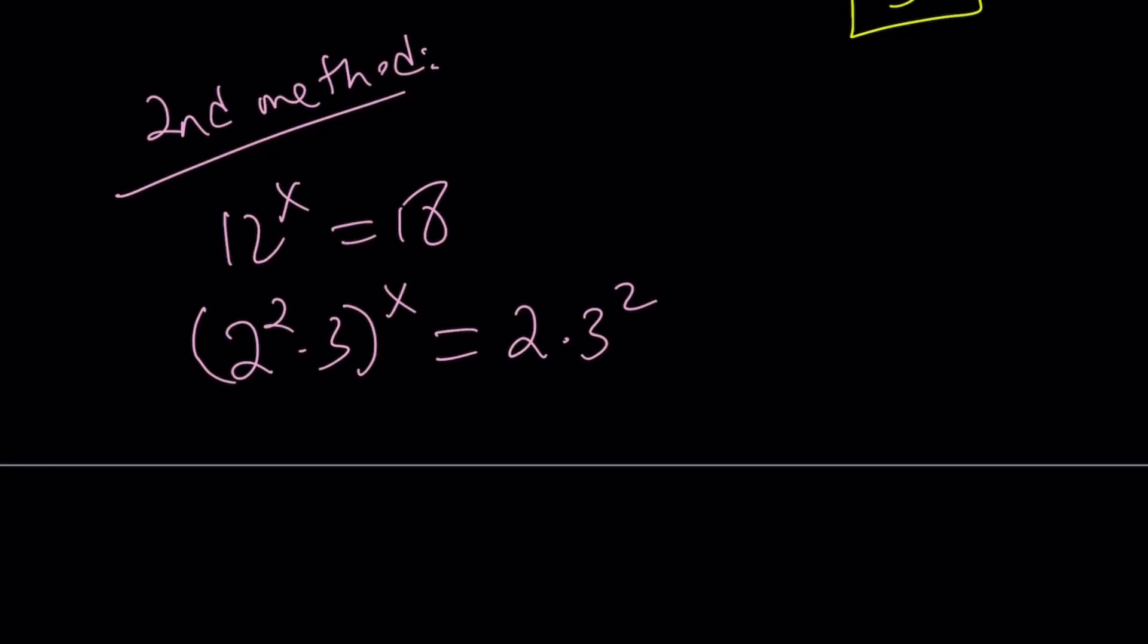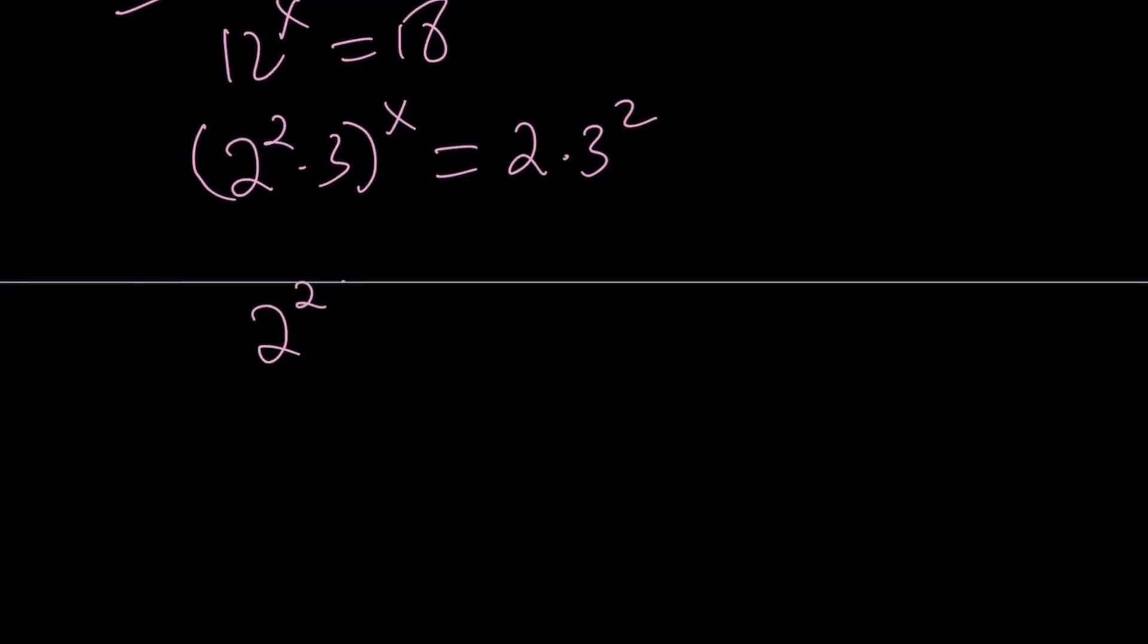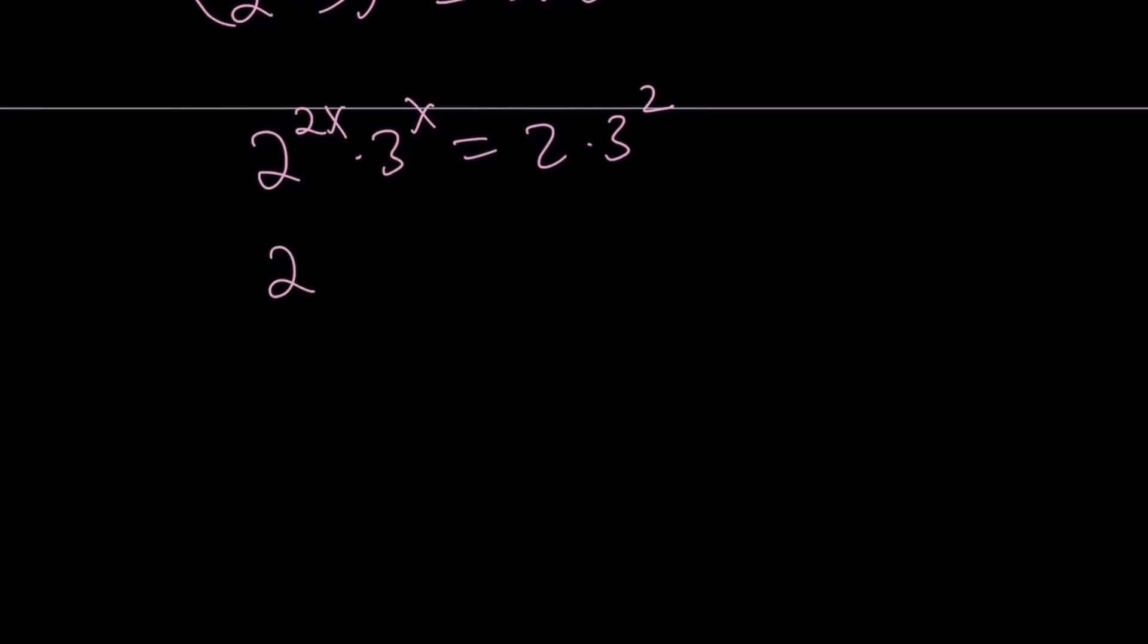So now we separated the 2s and 3s. Let's go ahead and distribute the power. It's going to be like 2 to the power 2x times 3 to the power x equals 2 times 3 squared. And kind of put together 2 to the power 2x divided by 2 and 3 to the power 2 divided by 3 to the power x.